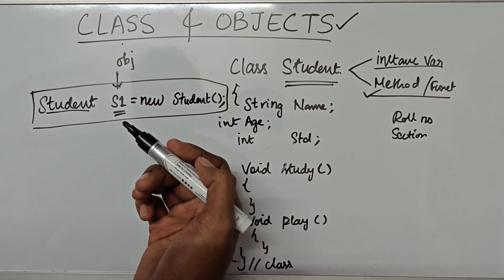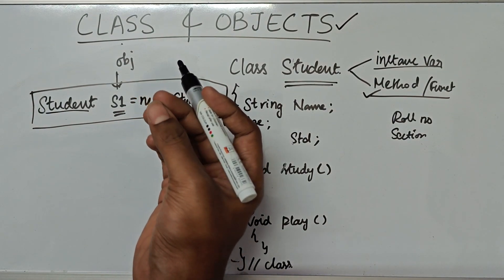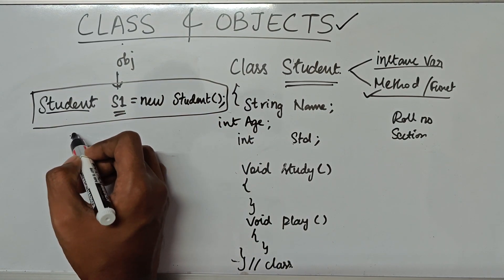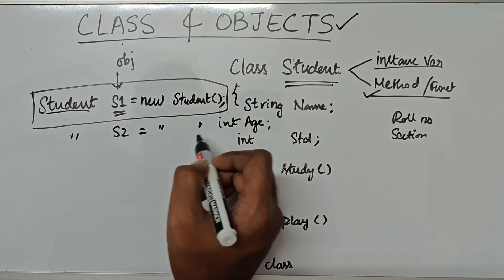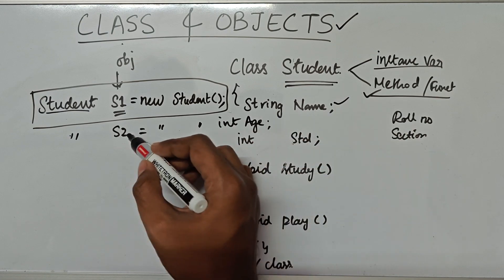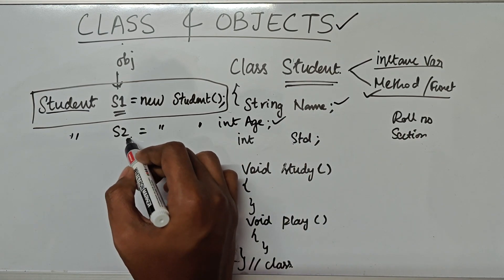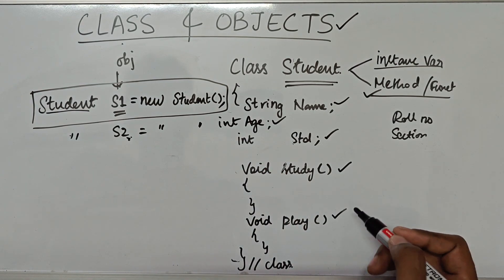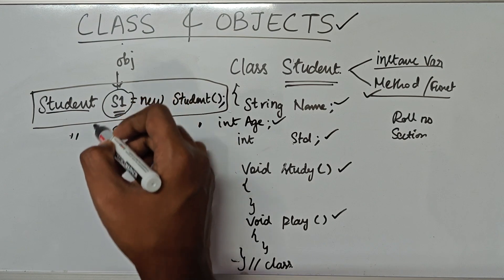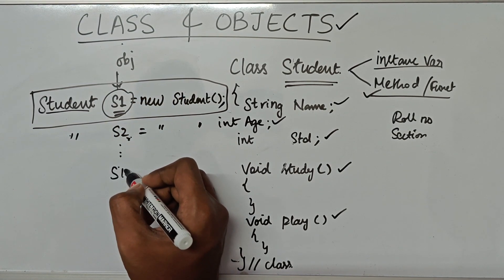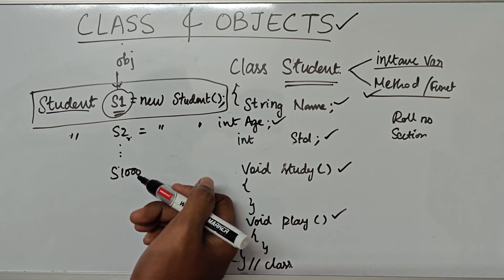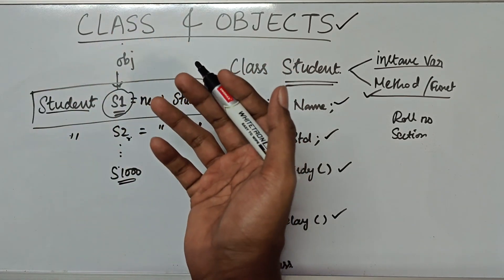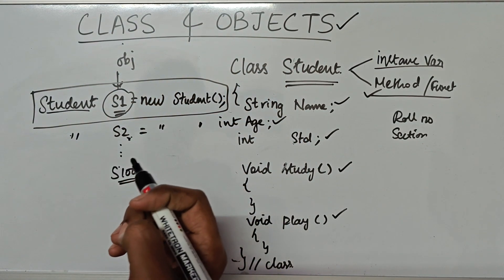So let's say we want to create 1000 more students. We can again write: Student s2 = new Student(). So s2 will also have a name, an age, a standard, a study method, and a play method — same as s1. Same goes for all the 1000 students we are going to create. Instead of writing 1000 lines, we can also create an array of objects, which we will see in the upcoming videos.